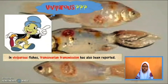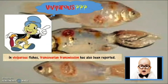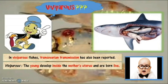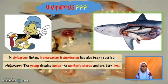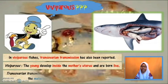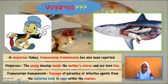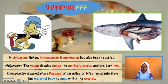Did you still remember the term viviparous? Viviparous means the young develop inside the mother's uterus and are born live. Well done. And the term trans-ovarian transmission means the passage of parasites or infective agents from the maternal body to eggs within the ovaries.